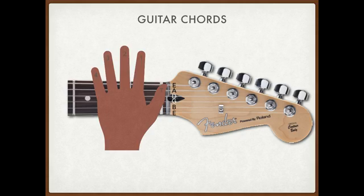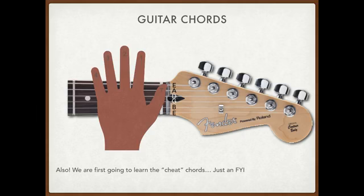Let's go to the next slide — here is your hand, or a shape of a hand. Take a look at the numbers; it's pretty self-explanatory. Your pointer finger is one, middle finger is two, ring finger is three, and your pinky is four. So we're just going to be learning the cheat chords. I like to call them cheat, but they're very common — there's not as much finger movement if you play them this way. They're not technically strictly these chords, but harmonically they work.